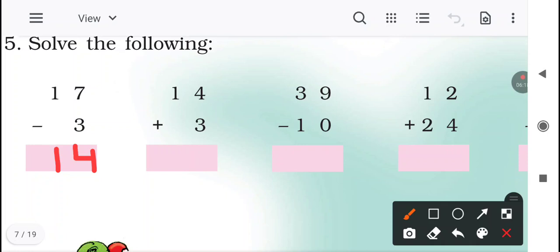Again, second question mein plus sign is there. 14 plus 3. 4 plus 3 is equal to 7, and 1 we will take as it is. Answer is 17. Aapne ek cheez notice ki children? See, 14 is the answer of first question. 17 minus 3 is equal to 14. But in the next question there is 14 plus 3. Answer is 17. So this is the best way to check our answer. Hum apne answers bhi check kar sakte hain. If you have any doubt ki yeh answer sahi hai ya galat hai, then how to check it? We can check it this way.